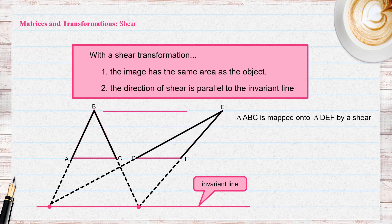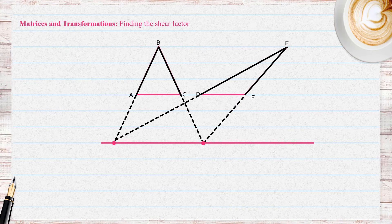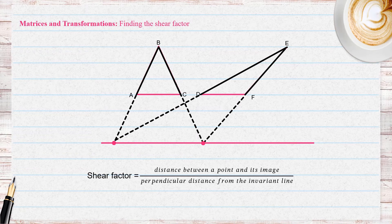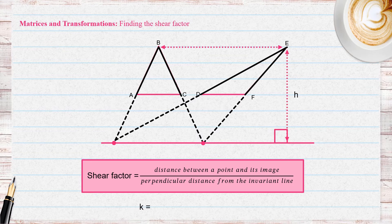The direction of shear will always be parallel to the invariant line. Now, how can we find the shear factor? We use the formula: shear factor equals the distance between a point and its image, divided by the perpendicular distance from the invariant line. For example, the shear factor K is equal to the length BE divided by the perpendicular distance from the invariant line, which we call H. So K equals BE over H.